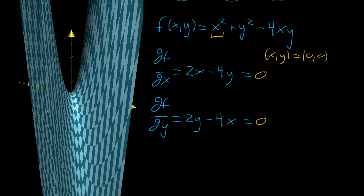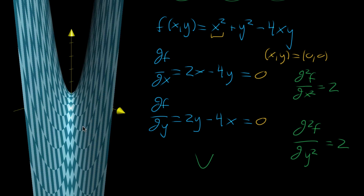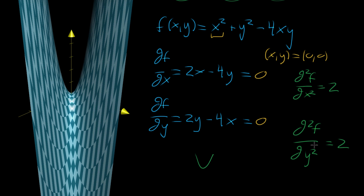Now let's take the pure second partial derivatives. The second partial derivative with respect to x twice gives a constant positive two, because the y term does nothing. Similarly, the second partial derivative with respect to y twice also gives a constant positive two. This would suggest positive concavity in both the x and y directions — that it looks like an upward smiley face from all directions, and should be a local minimum. But when we look at the graph, this isn't true — it's a saddle point.